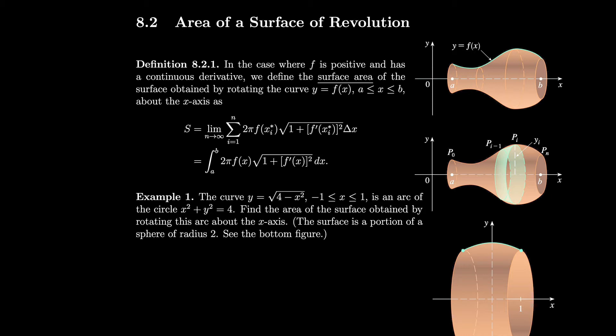This is pretty much the same as our arc length formula, where we look at two consecutive points, find the distance between them. But instead we also have to look at an entire band around the function, around the surface, and then we stack up all of those bands to get a surface area.